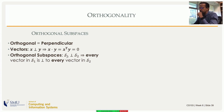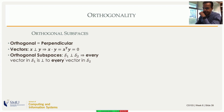I can extend that to talk about the orthogonality of subspaces. If I have two subspaces where every vector in one subspace is perpendicular to every vector in the other subspace, then these two subspaces are orthogonal to each other. So that's orthogonality of subspaces.